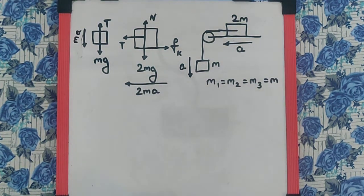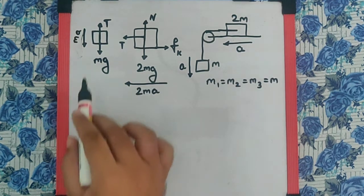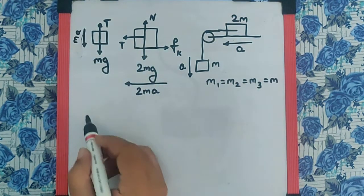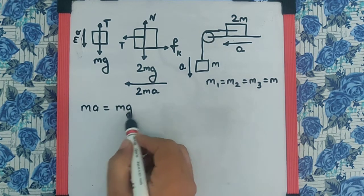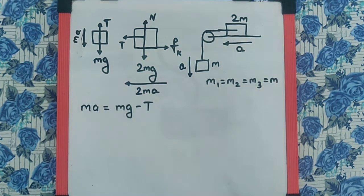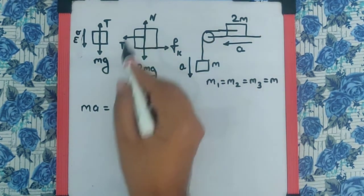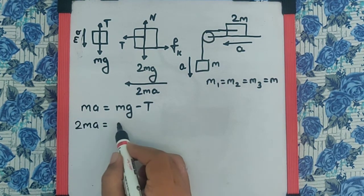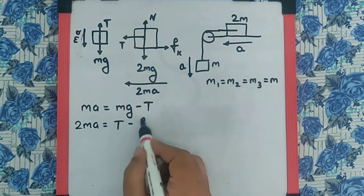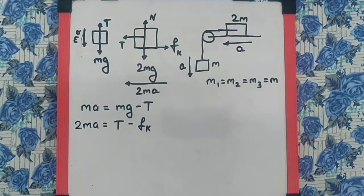Now, if we make the equations from the free body diagrams, the first diagram gives us MA equals Mg minus T, and the second free body diagram gives us 2MA equals T minus the friction.